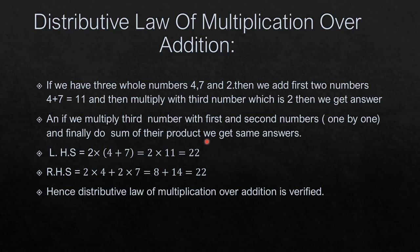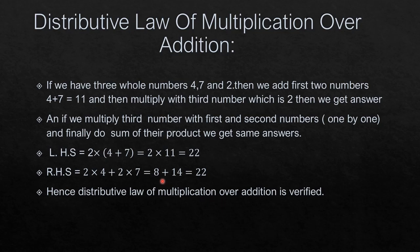Left hand side: third number is 2, and first two numbers are 4 and 7. Taking them in the bracket: 4 plus 7 is 11, and 2 x 11 is 22. So left hand side equals 22. Right hand side: we open the bracket — first multiply 2 by the first term 4, which gives 8. Then multiply 2 by the second term 7, which gives 14. Then sum the products: 8 plus 14 equals 22. Left hand side equals right hand side. Hence distributive law of multiplication over addition is verified.